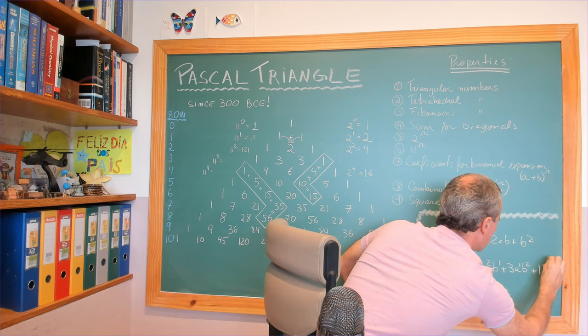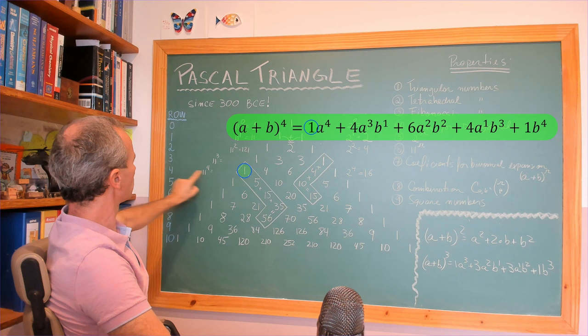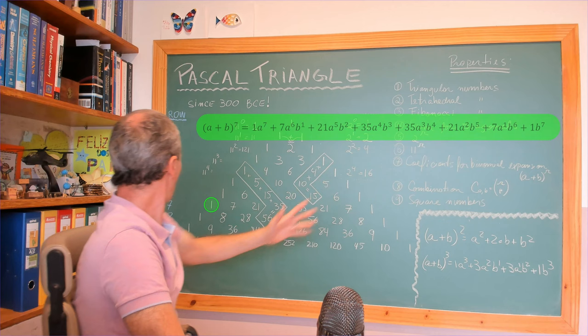Let's suppose you want to build this binomial to the fourth power — the coefficients are going to be the fourth row. Those are the coefficients. Let's suppose you want to know this binomial to the seventh power — no problem, those are all the coefficients.